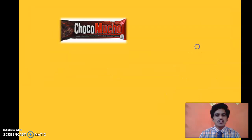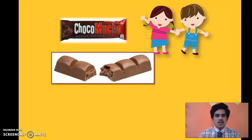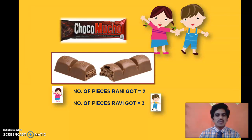He brought a wonderful chocolate and the task is to divide it between the two. They broke the chocolate — it had five parts — into two portions: one portion with two pieces and three pieces in the other portion. Rani was given two pieces and Ravi took three pieces. The ratio of Rani to Ravi is 2 is to 3.